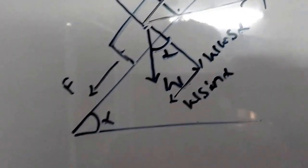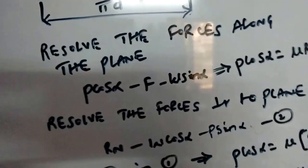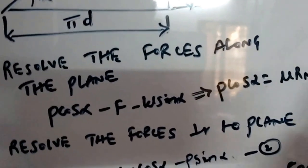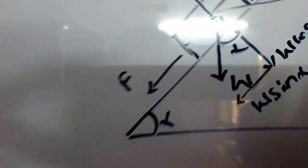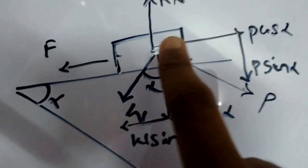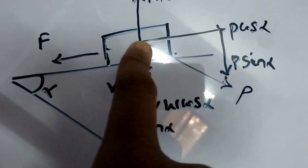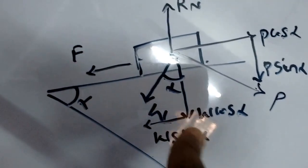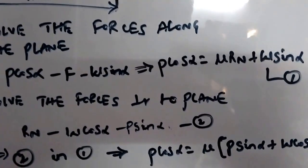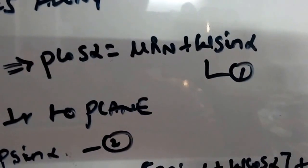Now let us resolve forces along the inclined plane. The sum of forces along the plane gives: P cos(alpha) minus F minus W sin(alpha) equals zero. This can be written as: P cos(alpha) = mu * RN + W * sin(alpha), since the frictional force F equals mu * RN.